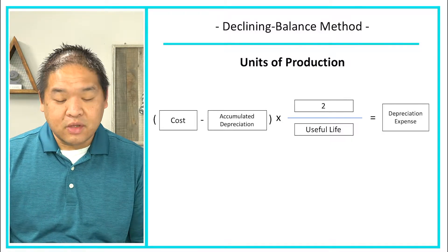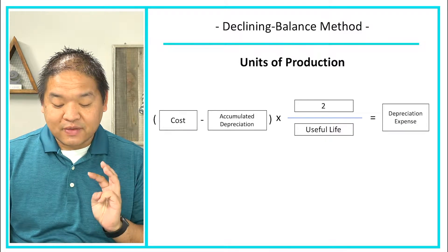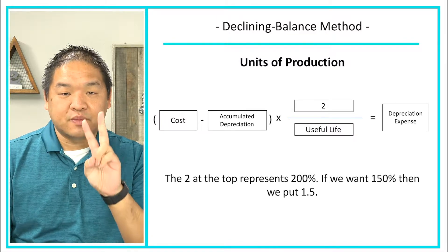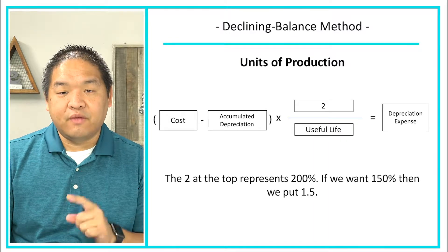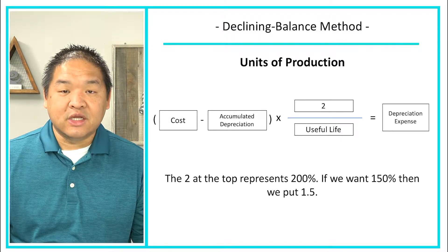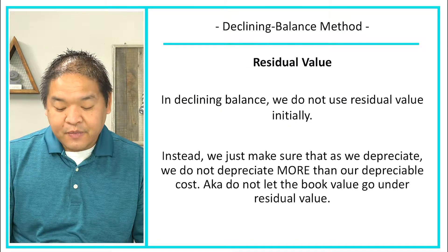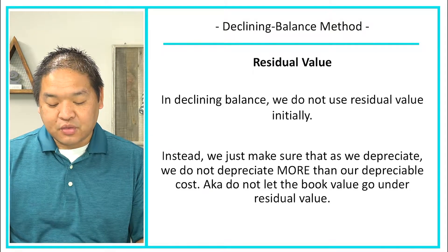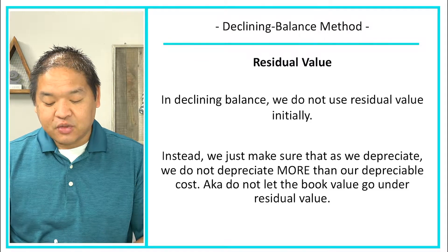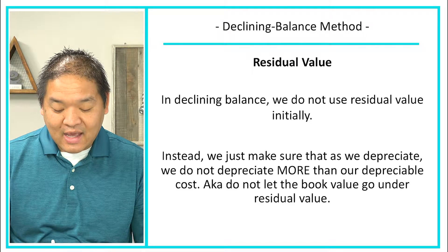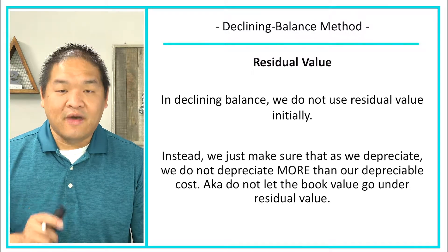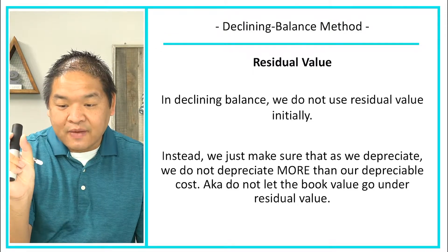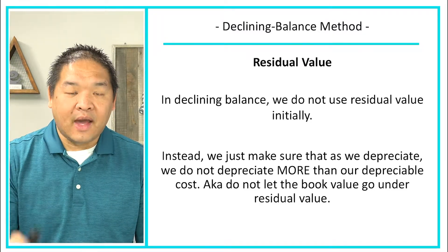We still need residual value, but we won't use it directly in our calculation. We need it to make sure we don't depreciate our asset below that residual value. We do not use residual value initially in declining balance; instead, we make sure that as we depreciate, we do not let book value go below residual value. Our ending book value must equal residual value, just as in the previous methods.